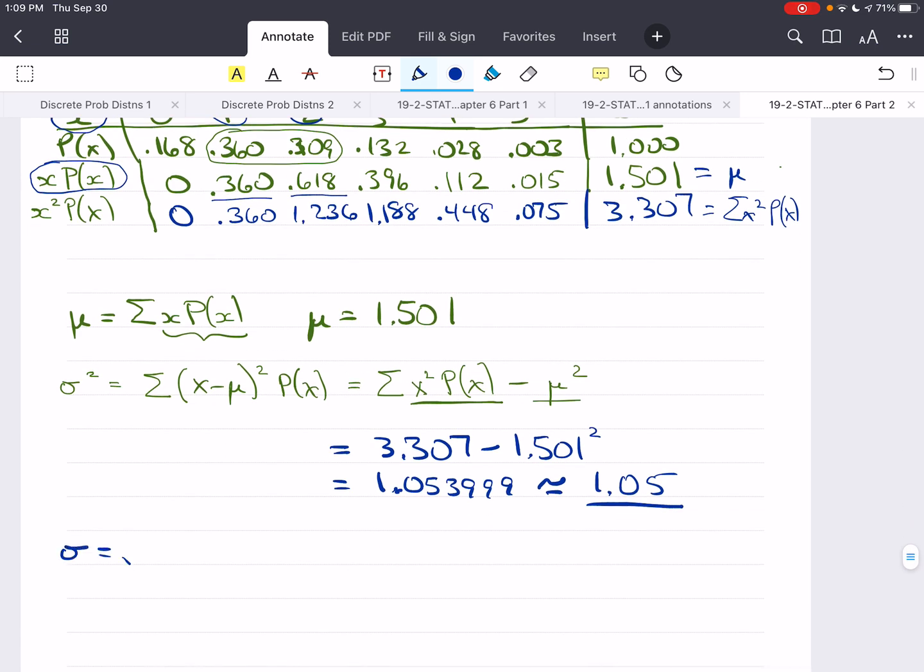Now, to get the standard deviation, be careful. You need to take not the rounded value, but you need to take the full value, the number that's in your calculator. Take the square root of that. And when I take the square root of this, I get 1.026644, etc. And so, I'm going to round that to two decimal places. I go to the third. So, I'm going to round this to 1.03 is the standard deviation.